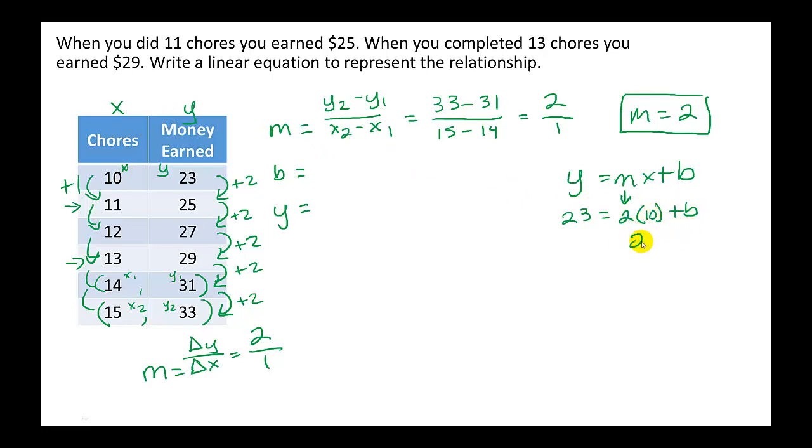2 times 10 is 20 bring everything else down 23 equals 20 plus b. We're going to subtract 20 from both sides to get b alone 20 take away 20 is gone we're left with a b on the right side 23 take away 20 is 3 b is 3.